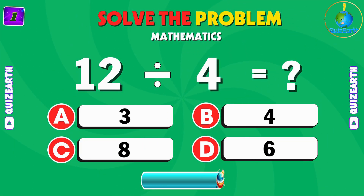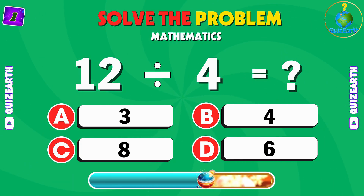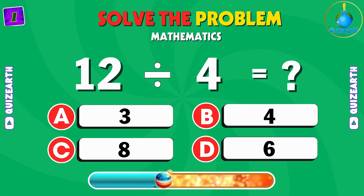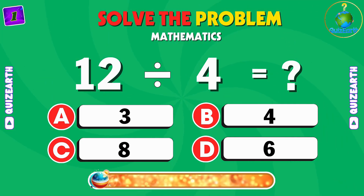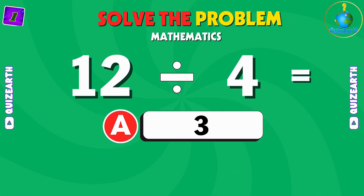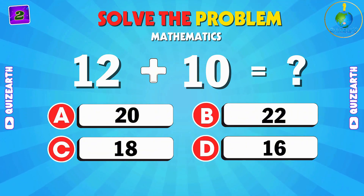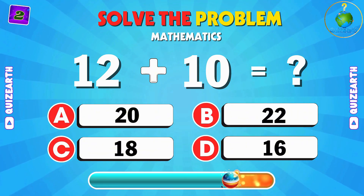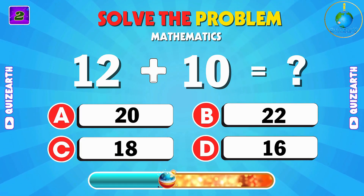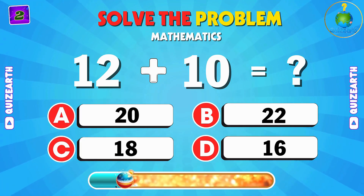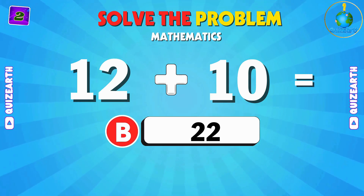Split 12 into 4 groups evenly — how many in each group? A: 3. Add 12 and 10, what's the answer? B: 22.